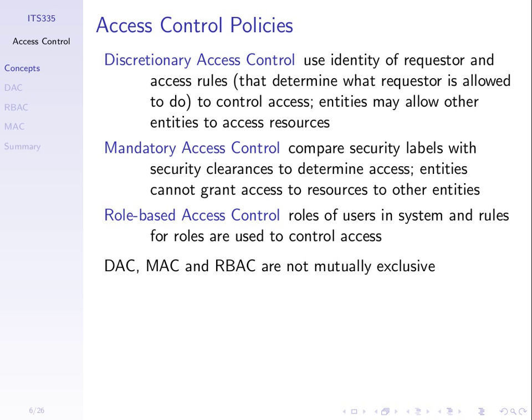In role-based access control, users are assigned roles, and similar to discretionary access control, who can access resources is based upon those roles. For example, students are assigned the role of student on a Moodle website. A student can take a quiz for their course, but cannot view the results of other students. The teacher role has different permissions than the student role. We assign users to particular roles and control who can access resources based on those roles.